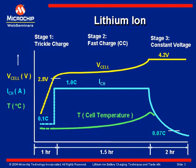Depicted here is a typical lithium-ion charge cycle. The left axis has the battery or cell voltage, the charge current, and temperature all rising up the left-hand axis. The X axis across the bottom is simply time. It's not proportioned or to scale, but to give you an idea: the battery voltage or cell voltage is the top line, the charge current is the middle line, and the cell temperature is the bottom line.